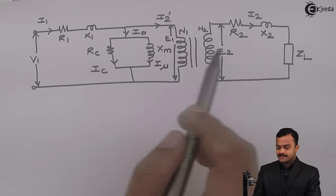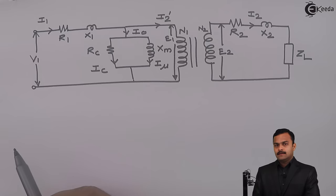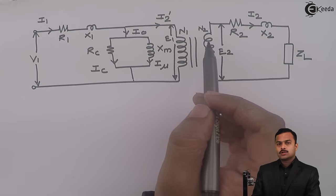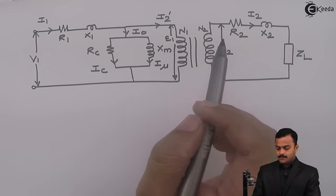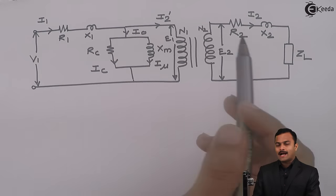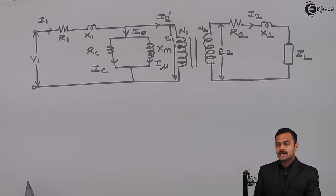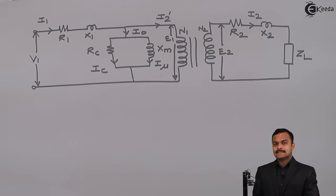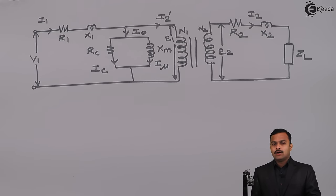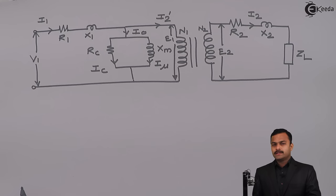So actually, there are two circuits like this. But in order to analyze the transformer, I can transform all the parameters to either side — primary or secondary — which is called the equivalent circuit referred to primary side or equivalent circuit referred to secondary side. Before doing this, I will approximate this equivalent circuit.